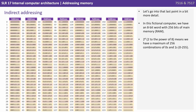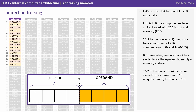Let's go into that last point in a bit more detail. In this fictional computer we have an 8-bit word with 256 bits of main memory. 2 to the power of 8 means we have a maximum of 256 combinations of zeros and ones, from 0 to 255 as shown here. But remember we only have 4 bits available for the operand to supply a memory address — 2 to the power of 4 gives a maximum of 16 unique memory locations, 0 to 15.